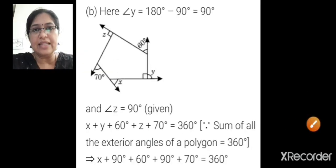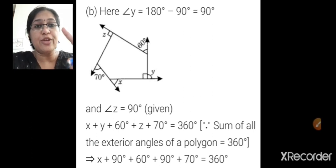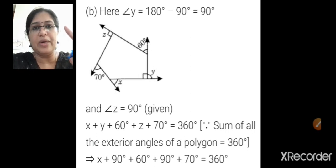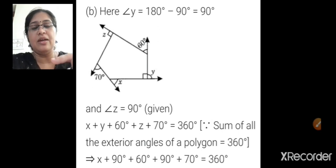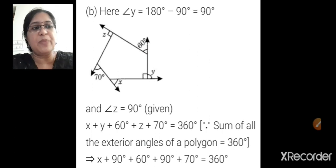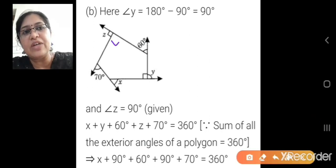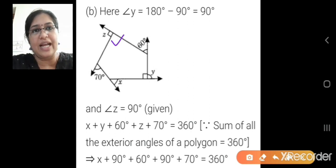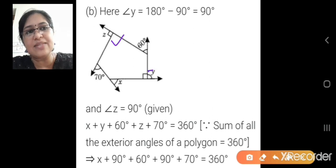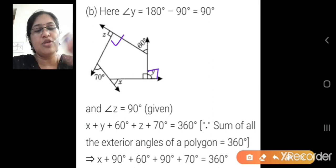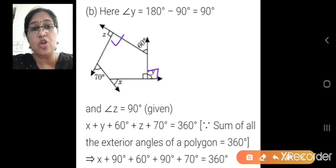Now let us see question b. Look at the picture properly. A square shape means 90 degrees — that is perpendicular. The other side also will be 90 degrees as a linear pair. Here z's value is given as 90, so both sides are 90 each. Y is also given as 90, so both sides are 90 each.